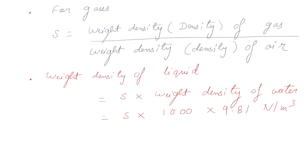To find the weight density of a liquid, we can directly use the value of specific gravity and multiply it by the weight density of water. This gives us: weight density of liquid = specific gravity × 1000 × 9.81 newton per meter cube.